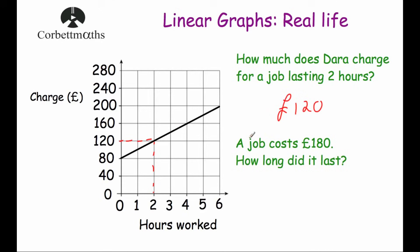Our next question tells us the job costs £180 — how long did it last? Looking at the vertical axis, it goes up in £40 increments: 0, 40, 80, 120, and so on. We're looking for £180, which is in the middle of 160 and 200. Using a ruler, go across to the line and then down. That job lasted five hours.